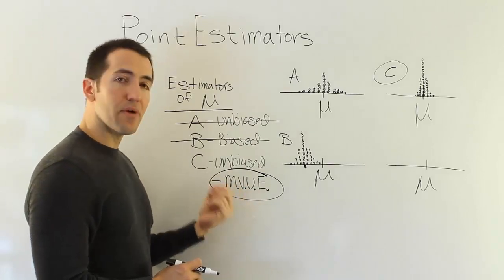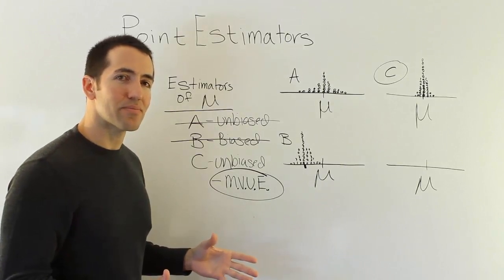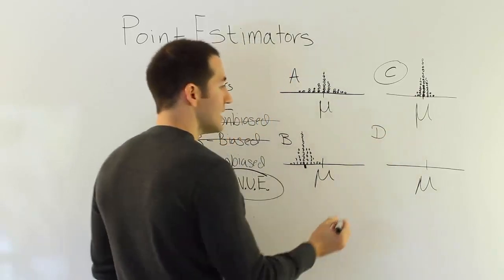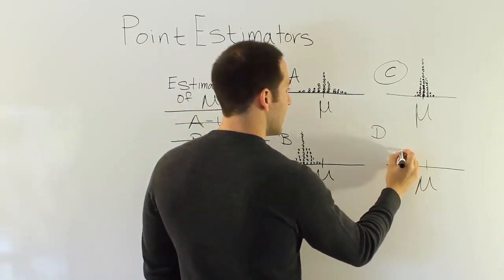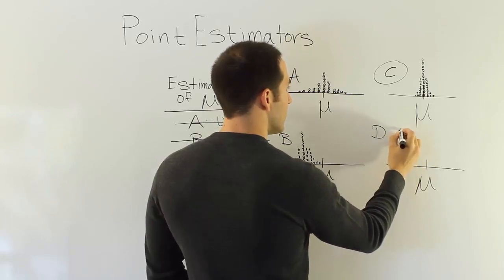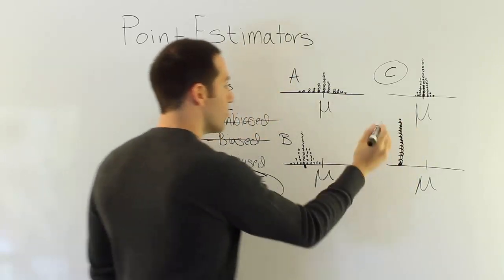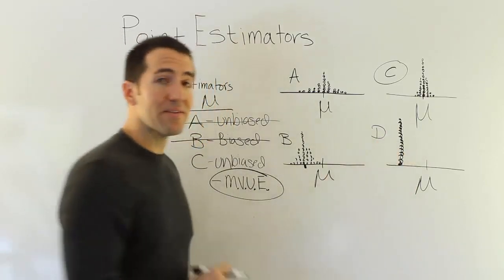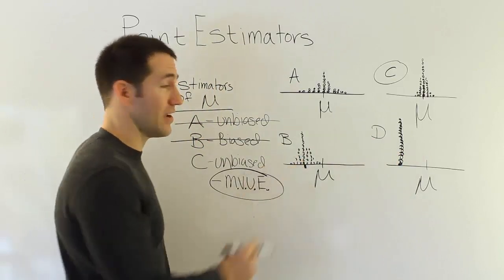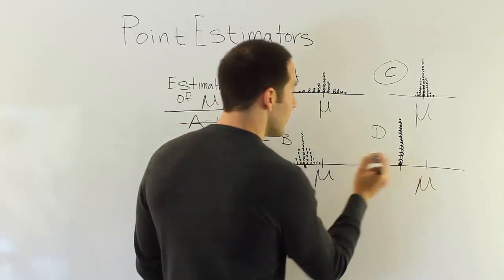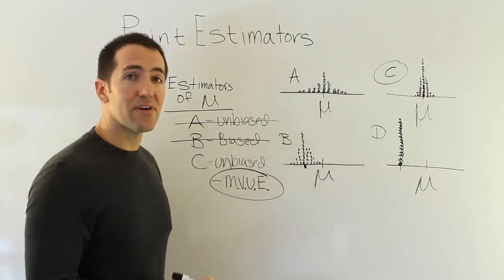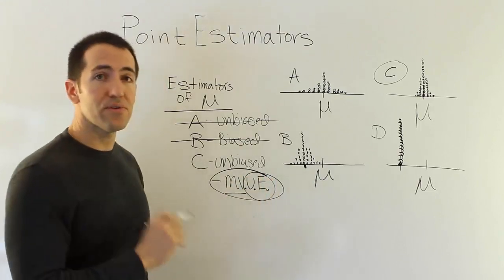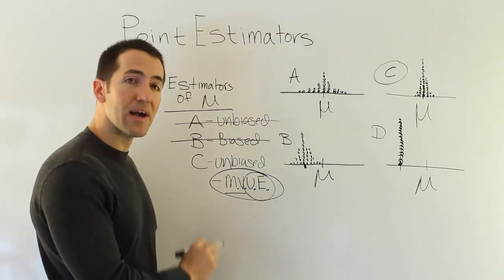I do want to mention, though, that the smallest variance by itself is not necessarily an important property. Let me give you an example. Let's say I have another estimator, D. Let's say D does this every time. So every time you do a study with D, it reports that the average is there, let's say. Well, you could certainly say that D has the absolute best variation possible. It has no variation. It's perfectly consistent. It always gives you the same result. But it also always misses the target. So minimum variance without the unbiased part is useless. We want minimum variance unbiased estimators.